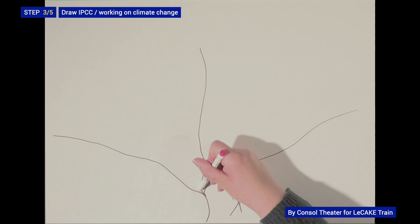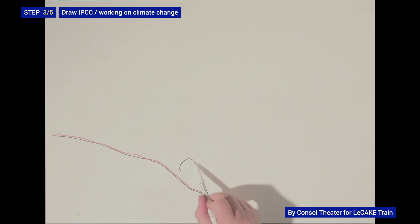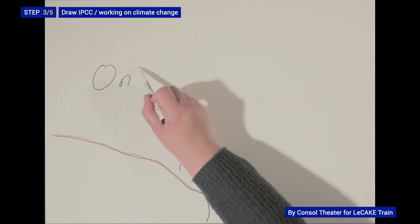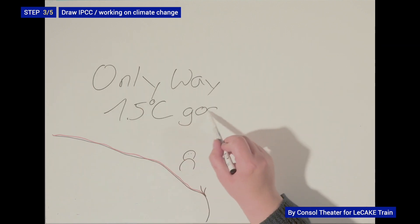Despite this uncertainty, the IPCC assumes that there is only one way left to avoid exceeding a global warming of more than 1.5 degrees compared to pre-industrial levels. Okay. That means the IPCC collects data on global warming and then makes predictions about how the climate might develop. All this is then written in the reports. And what happens with all this information?